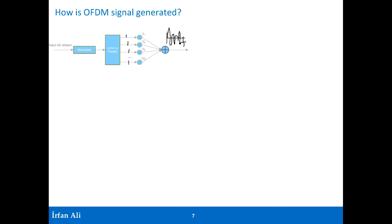The OFDM symbol is a curve over the time period T. You then need to add the cyclic prefix: in the first 5 microseconds you take the end portion of the symbol and prepend it, so instead of 66.67 microseconds you get 71 microseconds total. In the next slot you take the next 12 bits and go through the same process.